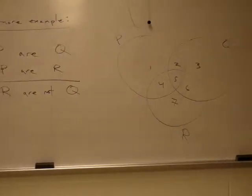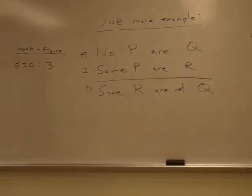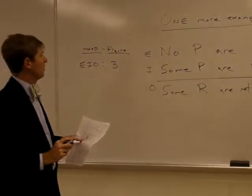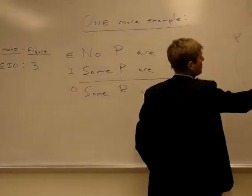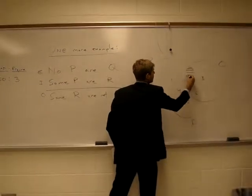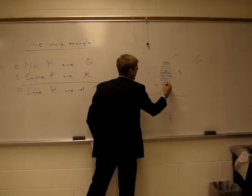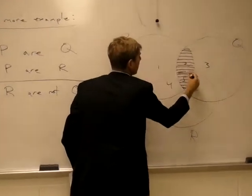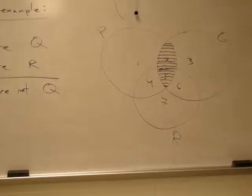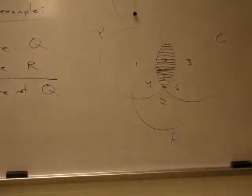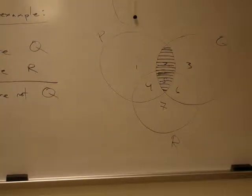Now we're going to diagram no P are Q first, as that is our universal premise. Recall that 2 and 5 are the area that intersects with P and Q. We just said no P are Q, so we're going to shade that in as the null set.